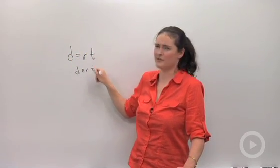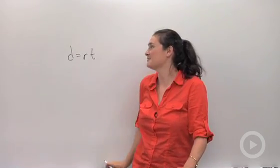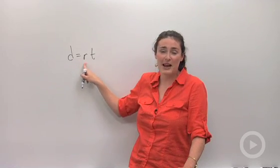DIRT. Distance equals rate times time. Mathematicians can't really spell, right? Just teasing. Okay, distance equals rate times time.